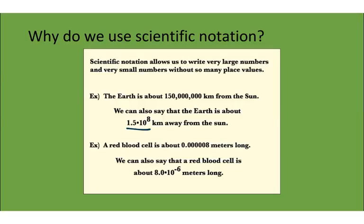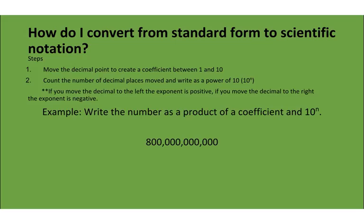So let's learn how to do that. How do I convert from standard form to scientific notation? Well, the first thing you need to remember is this. If it's a very large number, when you multiply it by a power of 10, that power of 10 will be positive. If it's a very small number multiplied by a power of 10, it'll be negative. The power will be negative. So how do I do that? The first thing I need to do, here are my steps, is move the decimal point to create a coefficient between 1 and 10.